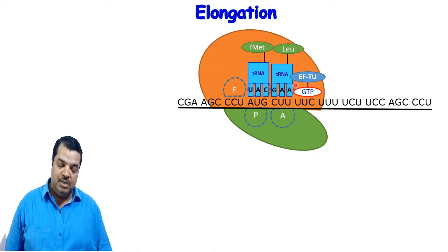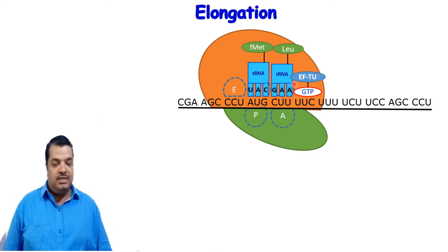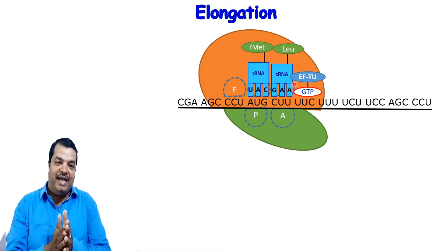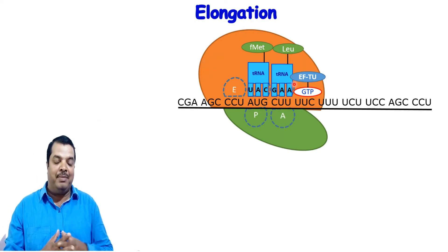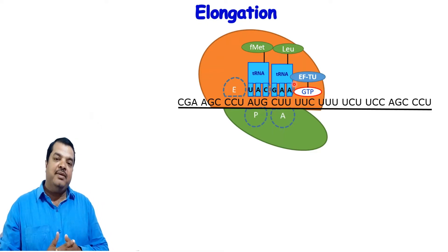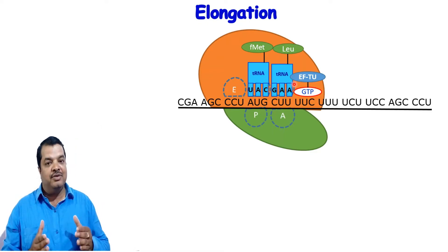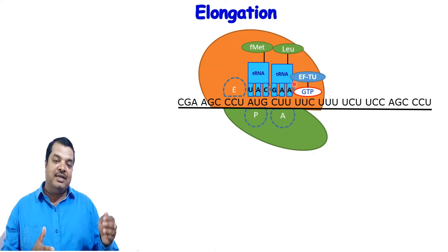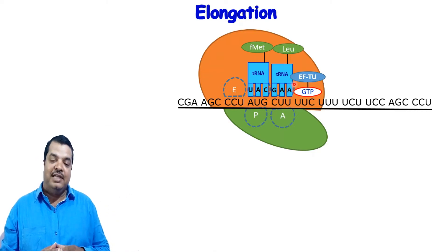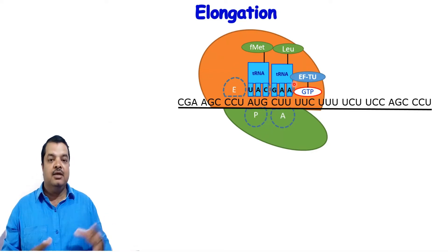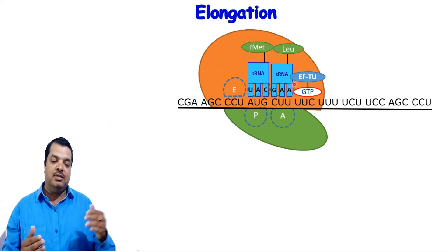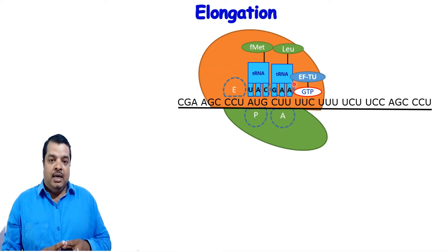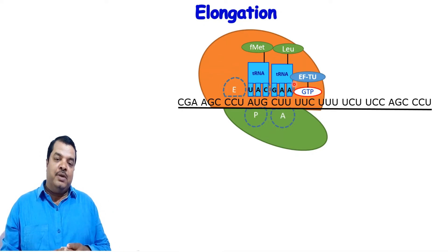This is the elongation factor — thermal unsensitive (EF-Tu). The initiation factors are IF3, IF2, IF1. The elongation factors are: thermal unsensitive (EF-Tu), thermal sensitive (EF-Ts), and EFG. These are the three different elongation factors responsible for the elongation step.